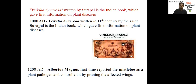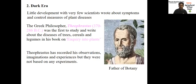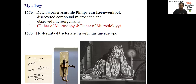The first pathogen reported in the world is Mistletoe, a phanerogamic parasite. It was first reported by Albertus Magnus during 1280 AD. In the dark era, the father of Botany is Theophrastus, who studied and wrote a lot of texts about the diseases of trees, cereals, and legumes in his book 'Enquiry into Plants,' which contains nearly more than 200 diseases. These are important events from the dark era.